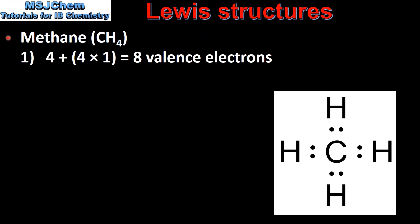Next we look at some examples, starting with methane, which is CH4. In step 1 we count the total number of valence electrons in all the atoms in the molecule. Carbon has 4 valence electrons and hydrogen has 1 valence electron, multiplied by 4 because there are 4 hydrogens in the molecule. This gives us a total of 8 valence electrons.